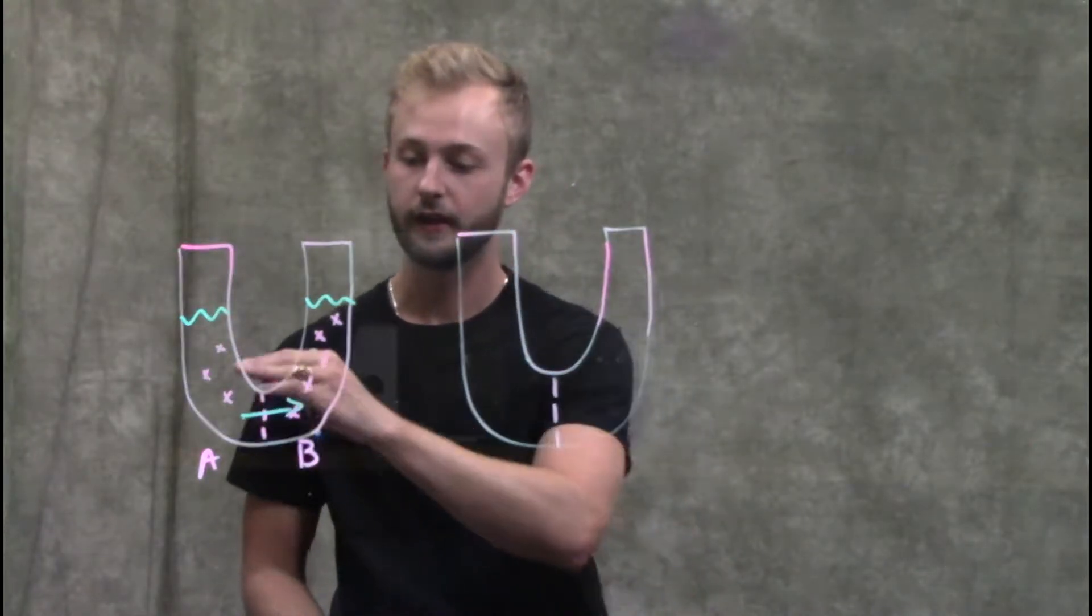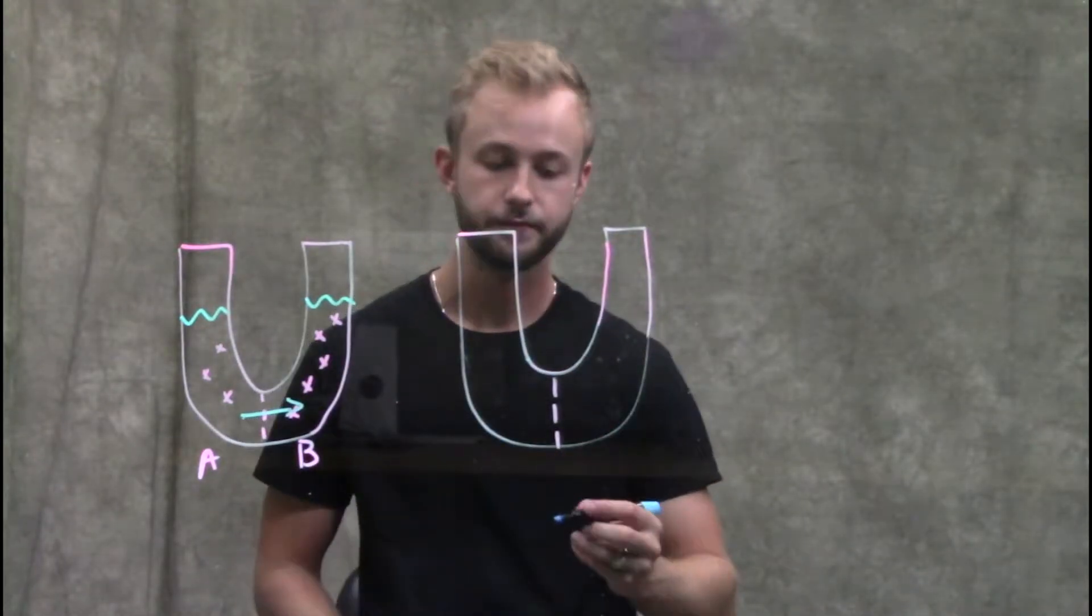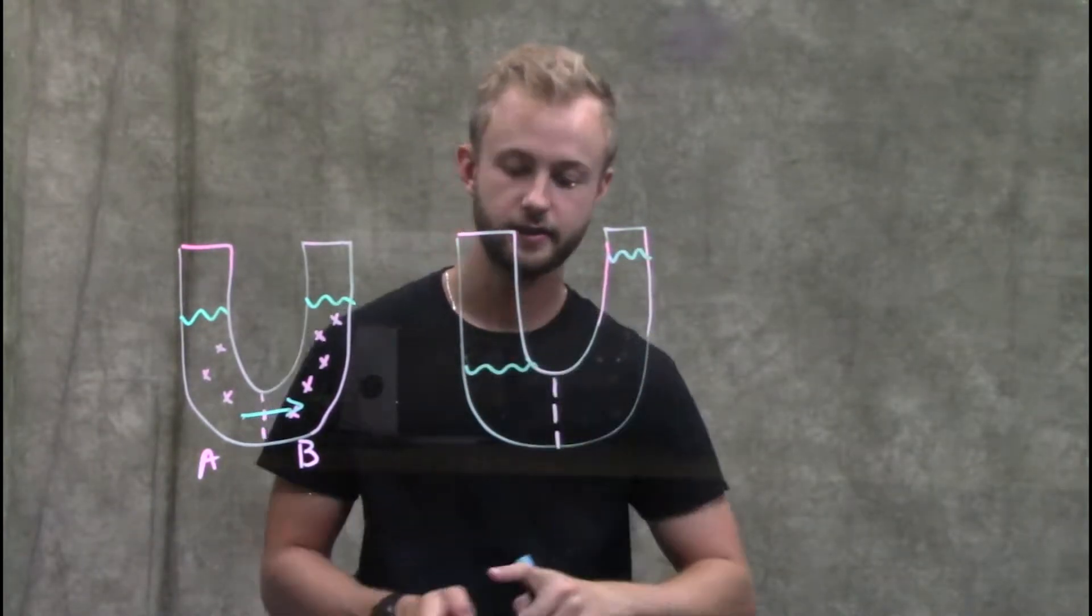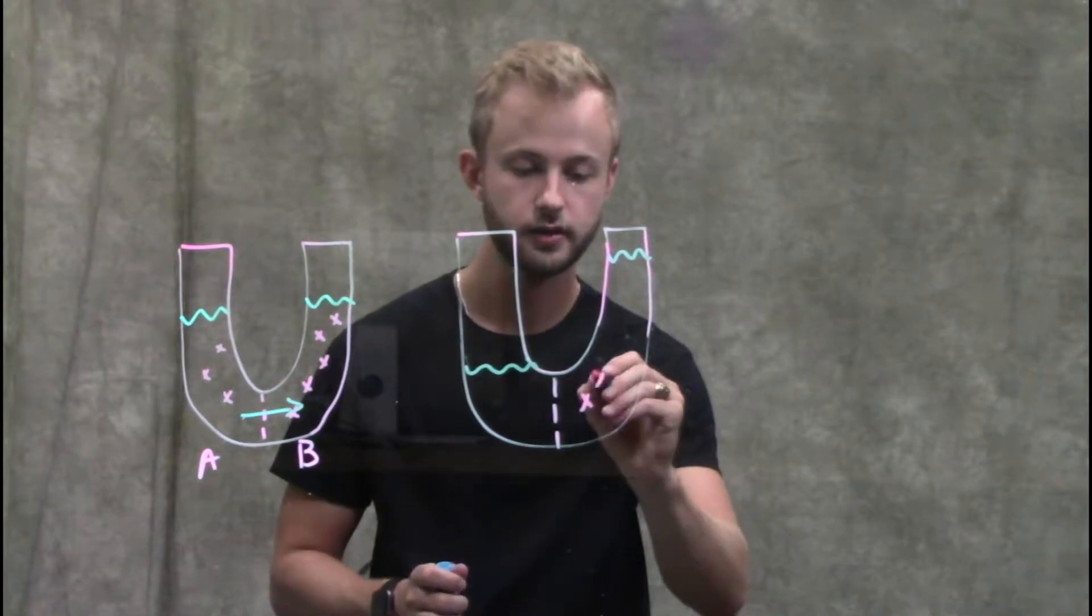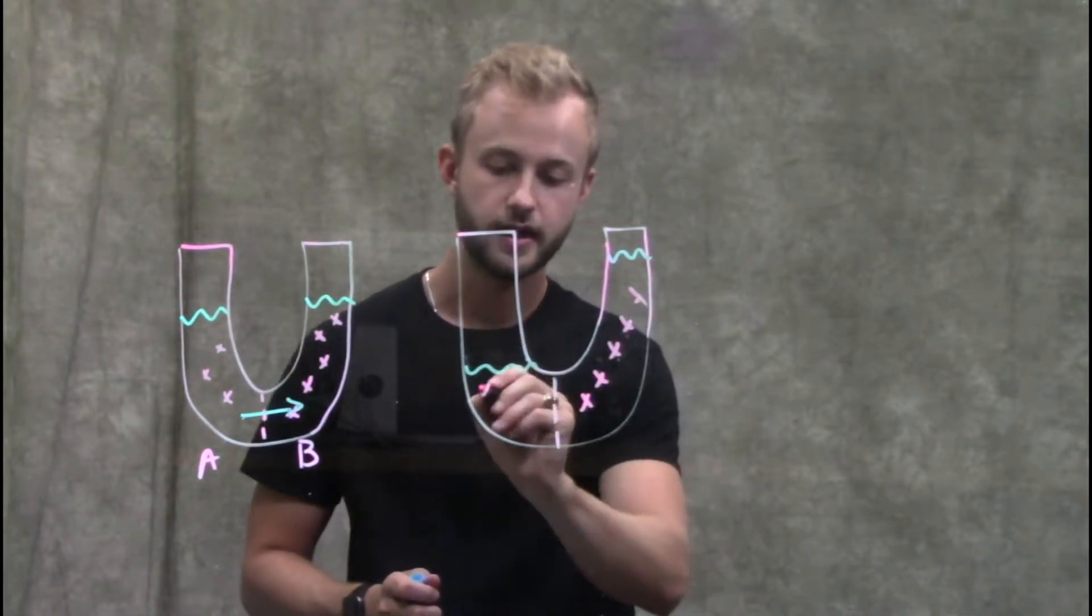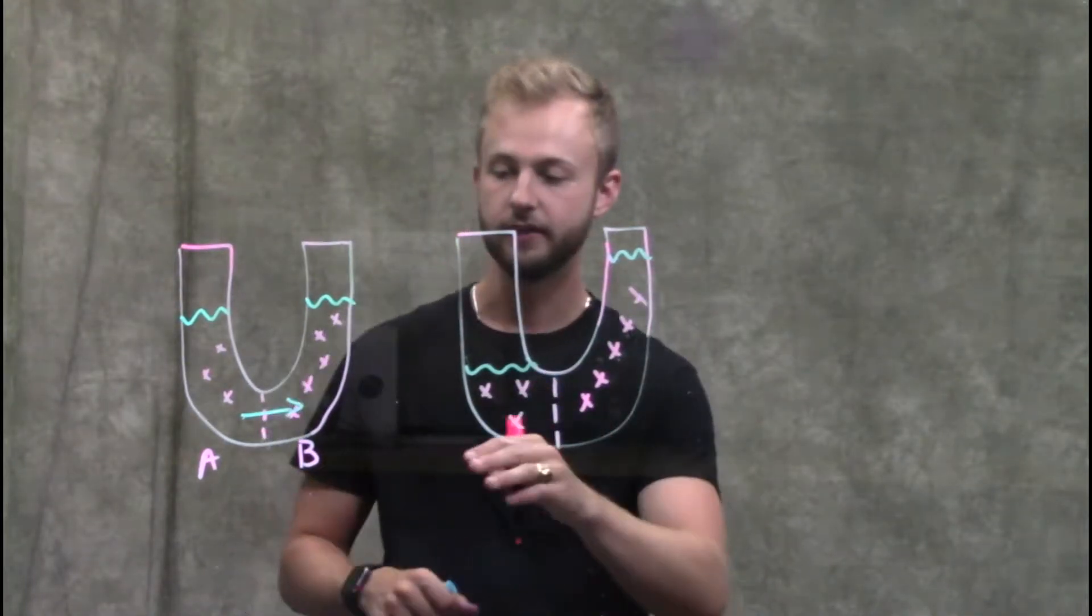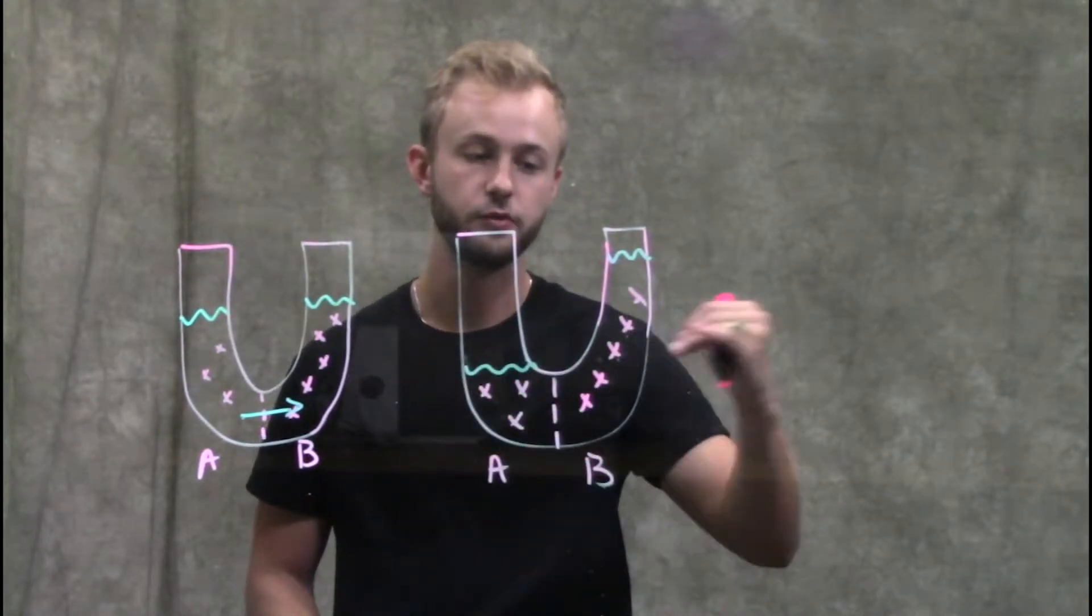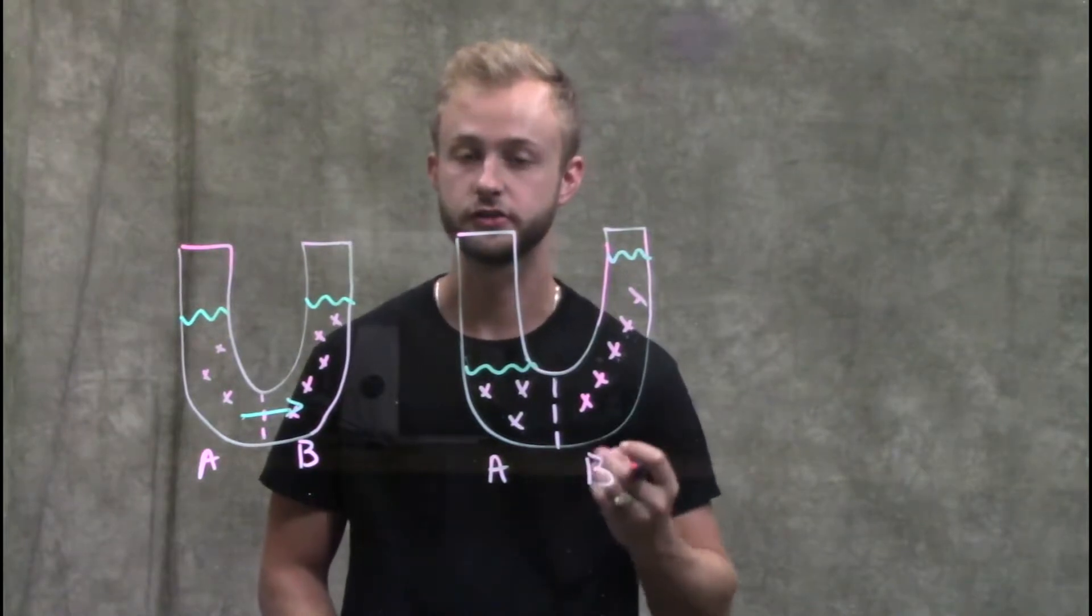If we allow these two sides to come to equilibrium, the side with the five sugar molecules is going to have a higher water level than the side with three sugar molecules. This is because we have water moving towards a region of higher solute concentration.